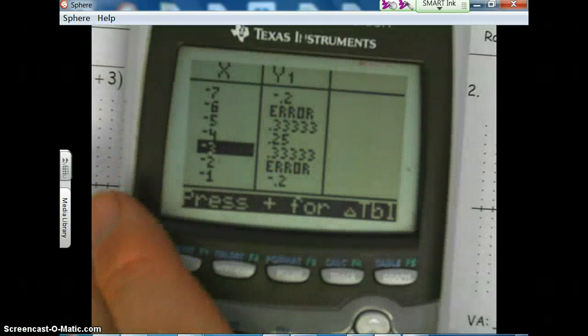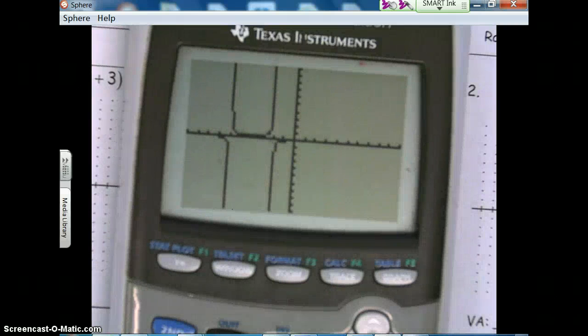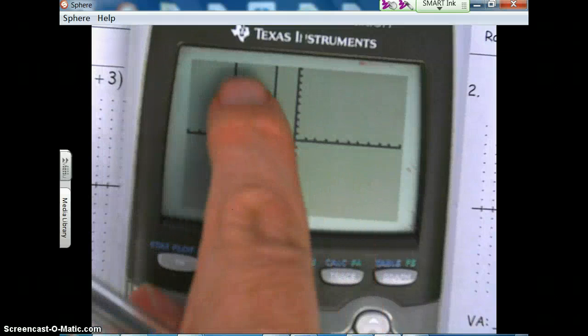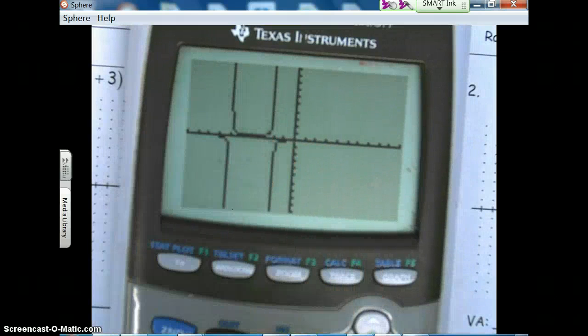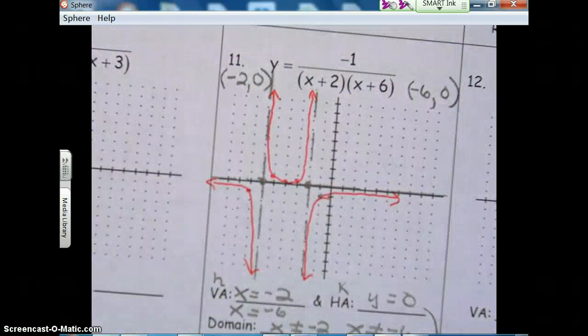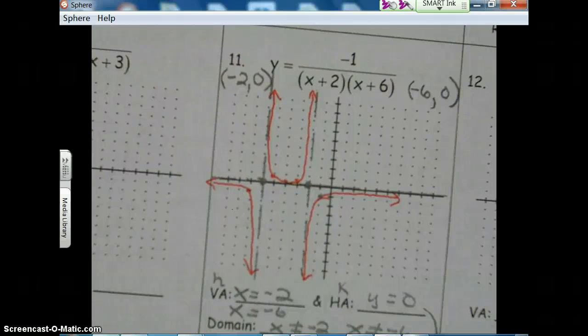Let me show you on the calculator. Here's your two opening down, and then you got your U going up with your two vertical asymptotes on both sides. So I hope that helps. I'll see you in class tomorrow. Go Spurs Go!